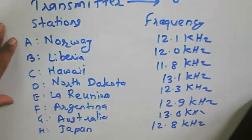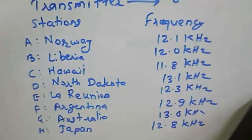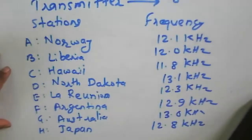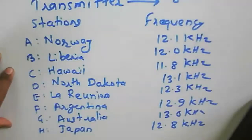In contrast to LORAN — which has a master and a secondary station — in Omega, there is no master and no secondary station. Any navigator can use any station and get an accurate line of position. The system uses time differences to find positions. With this, we stop here.